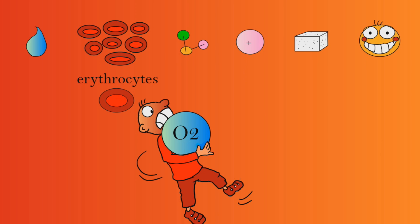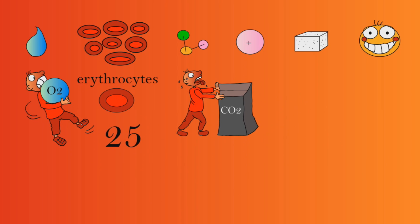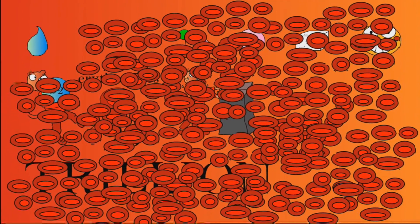They carry oxygen and can also help move carbon dioxide through your blood. Right now you have approximately 25 trillion red blood cells circulating throughout your body.